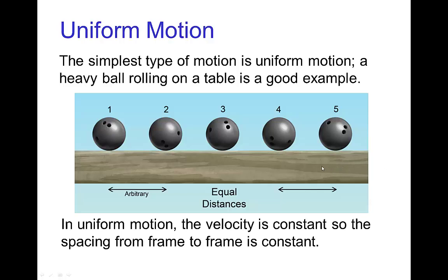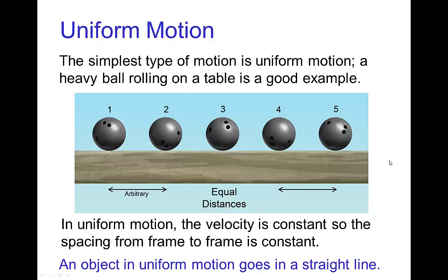In uniform motion, besides the speed being constant, we also have that the object is traveling in a straight line. For right now, we'll mostly concentrate on the spacing being the same spacing from frame to frame, or from key to key.